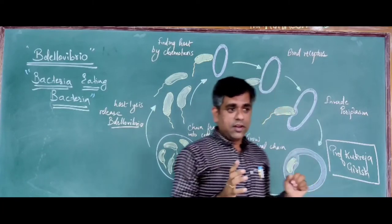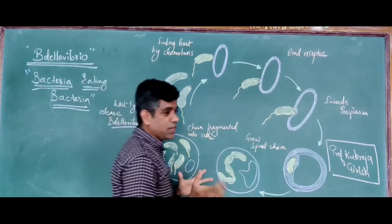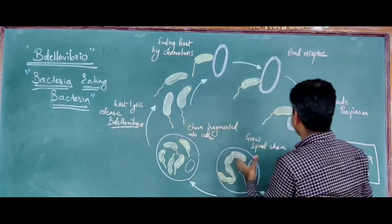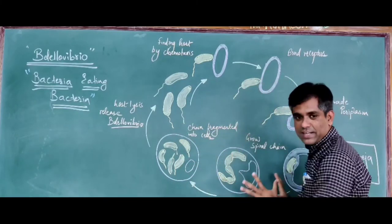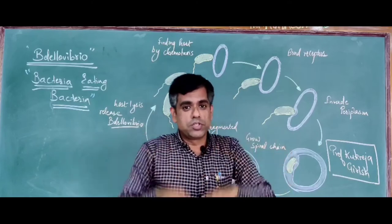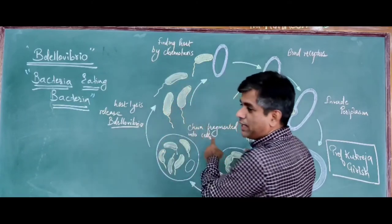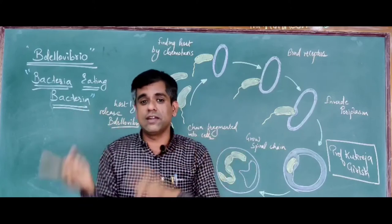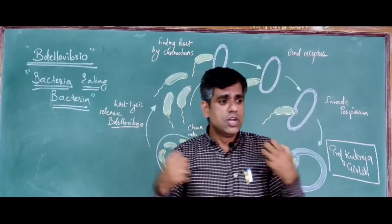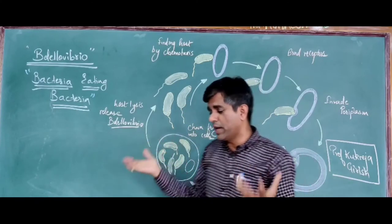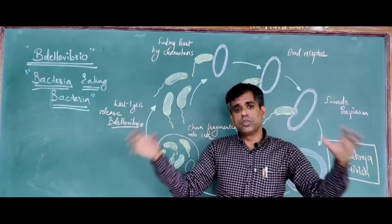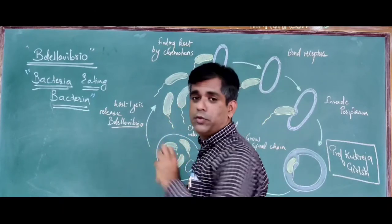As you can see in the cycle, Bdellovibrio spends about 15 to 20 minutes inside the host cell. Yes, these are parasitic bacteria which are literally eating and engulfing other bacteria and growing inside them. You can find them in sewage, soil, and marine environments — wherever you find their hosts like E. coli, Pseudomonas, and Rhizobium, there are chances that Bdellovibrio will be dwelling there.